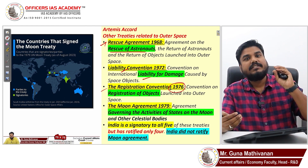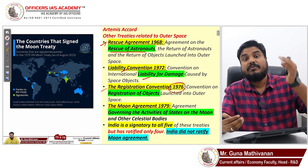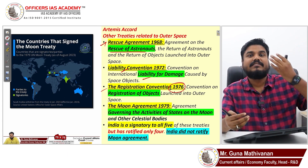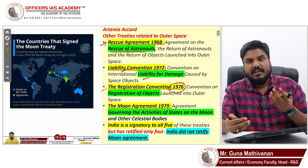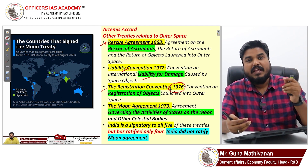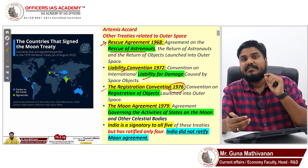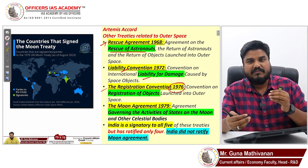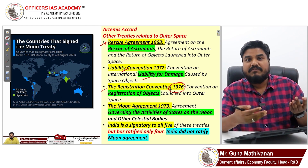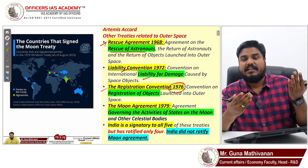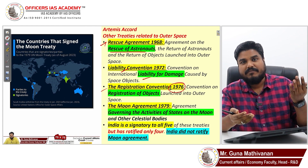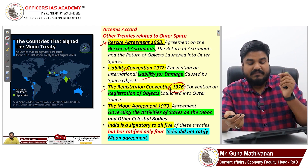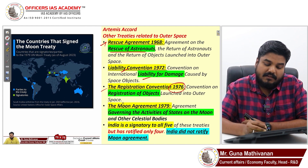The fourth is the Registration Convention of 1976. This convention requires all countries putting objects in space to register their objects. Before India launches a satellite or spacecraft, it must register in a common register — passing information that a satellite or spacecraft is being sent.